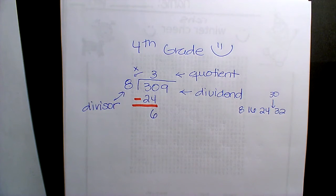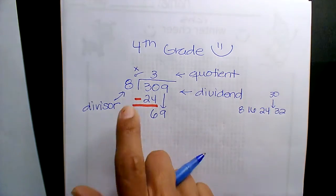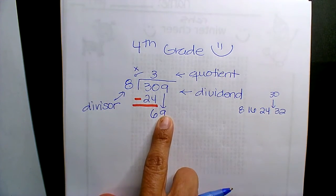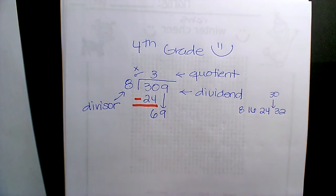Okay, so now you bring down the next digit, which is 9. Okay, 8 into 69, so you're going to go 8, 64, not 7, because that's, oh wait, 9, because that's 72? Yeah, yeah. Okay.